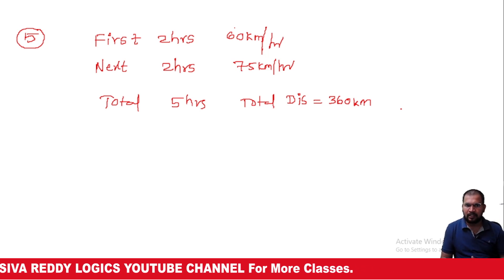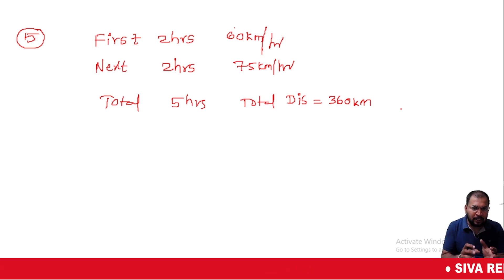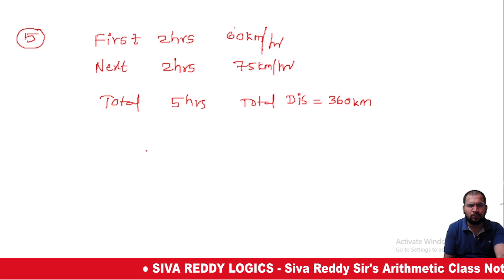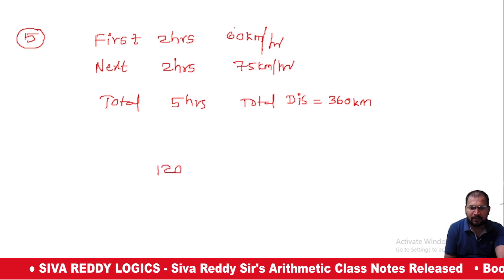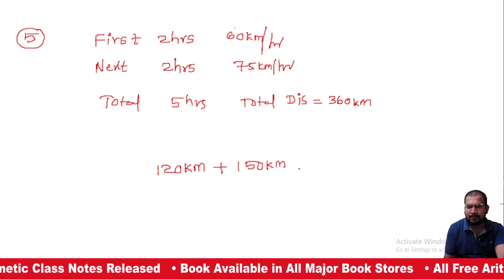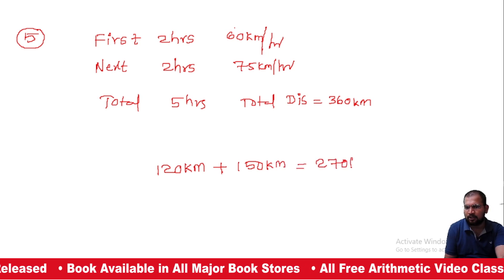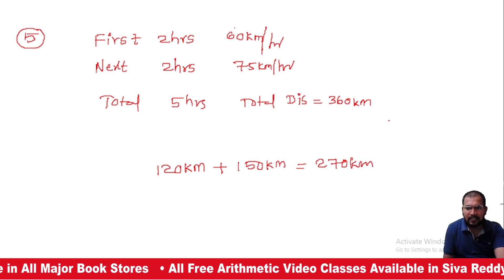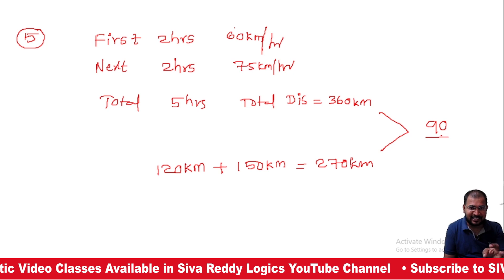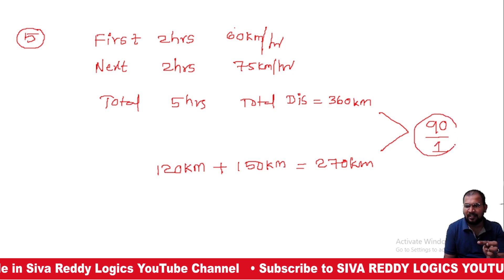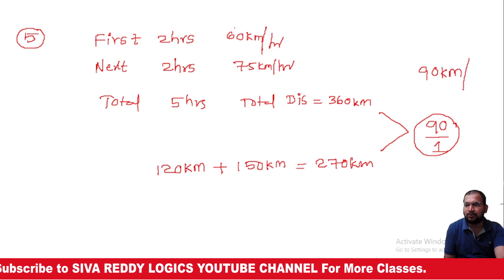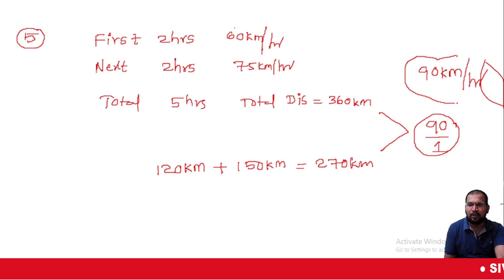First 2 hours at 60 km/h gives 120 km. Next 2 hours at 75 km/h gives 150 km. Total of 5 hours with 360 km total. Remaining 1 hour at 90 km/h. So the remaining distance is 90 km, and the answer is 90 km/h.